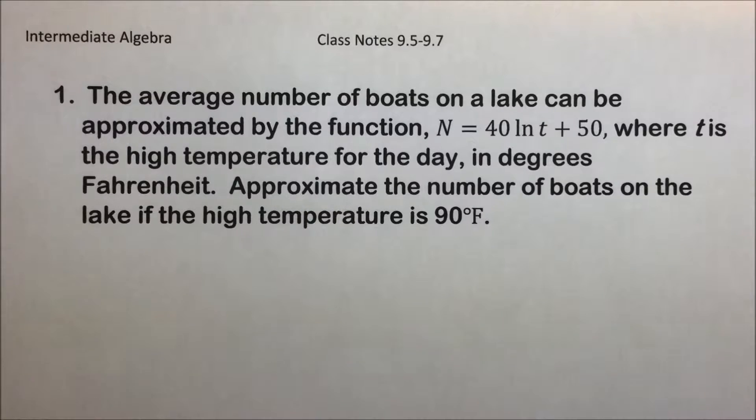In this first problem, the average number of boats on a lake can be approximated by the function N = 40 ln(t) + 50, where t is the high temperature for the day in degrees Fahrenheit. Approximate the number of boats on the lake if the high temperature is 90 degrees.